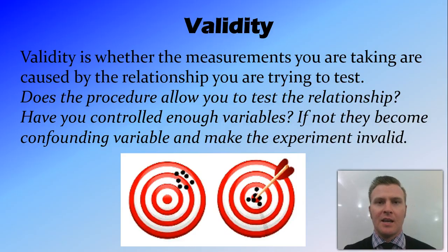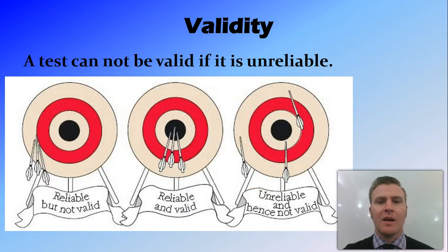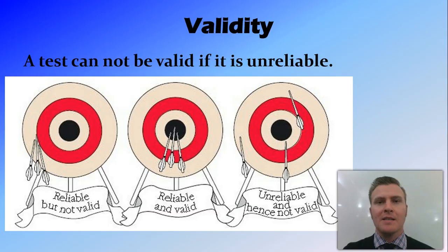You can see here we've got two targets. In the first target the results are invalid because they're not testing what we're trying to test, and in the second they're valid — they're on the mark. If a test is unreliable, you cannot have validity. You both have to have the controlled variables controlled, as well as have a reliable experiment, meaning the results you've got are all close together.